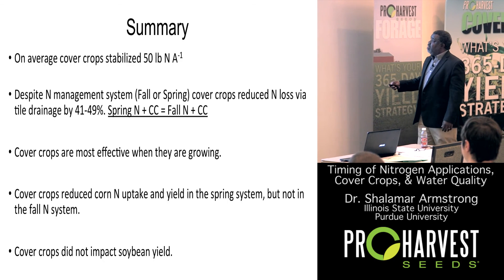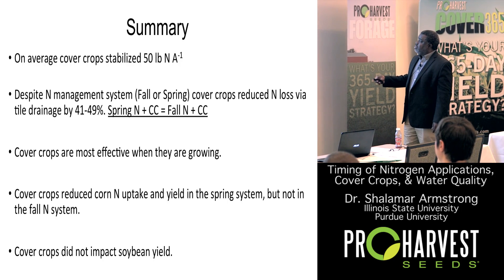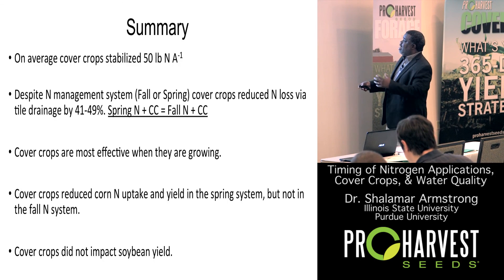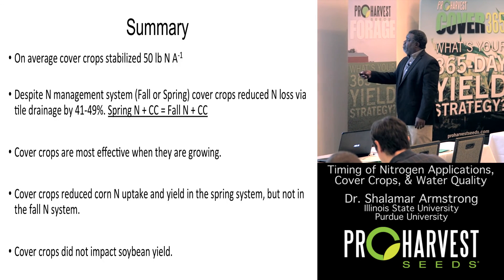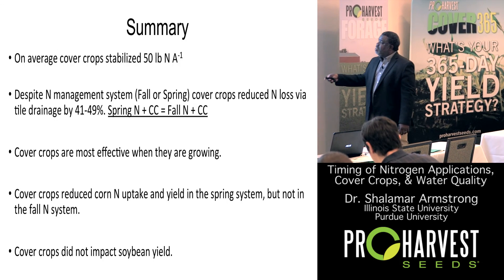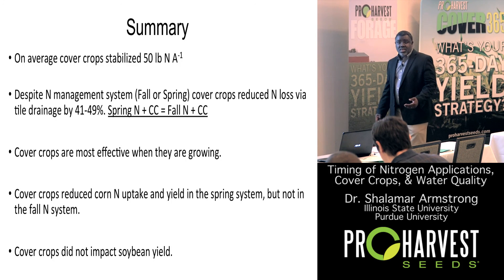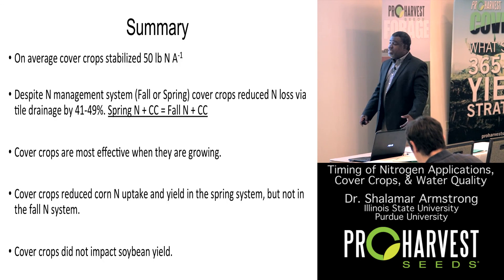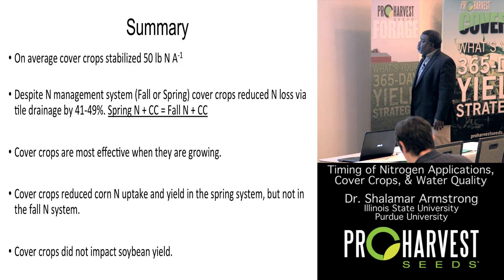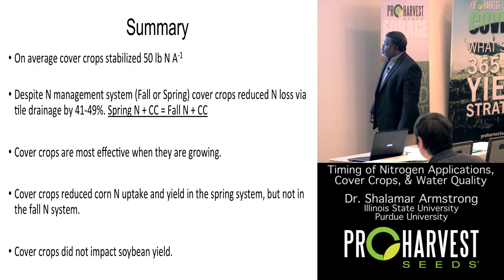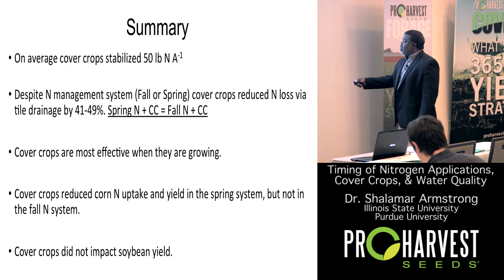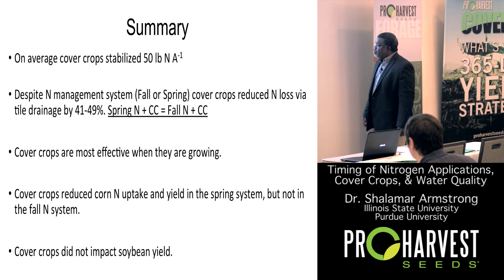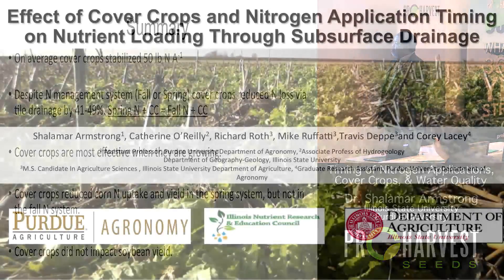Summary: Cover crops were able to stabilize or scavenge about 50 pounds per acre. A range of reduction when you add cover crops to a system, despite whether it's fall applied or spring applied nitrogen, is 41 to 49 percent reduction. Residual nitrogen in the soybean year - on average about 53 percent reduction in what you're losing. Cover crops are most effective when they're growing. Cover crops slightly reduced uptake and yield in the spring system, but not in the fall system. Cover crops did not impact soybean yield.